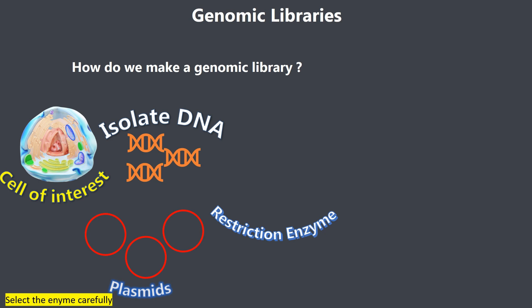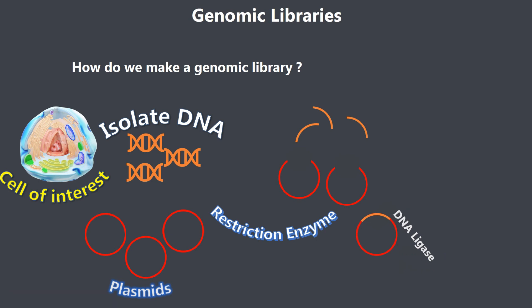One important thing to notice is that we have to select the restriction enzyme very carefully. We are going to cut up our DNA and the plasmid with the same restriction enzyme. Once we have cut up the DNA and plasmid, we need to ligate them together using DNA ligase. Once the DNA is pasted into the plasmid, we are ready to transform them into bacteria.